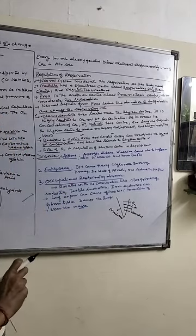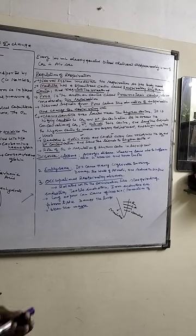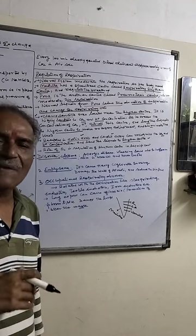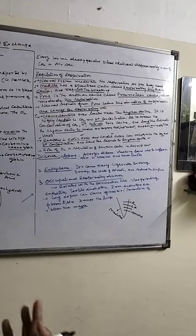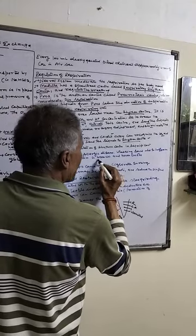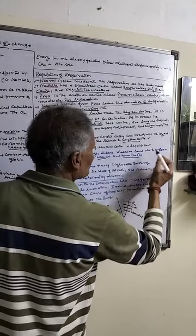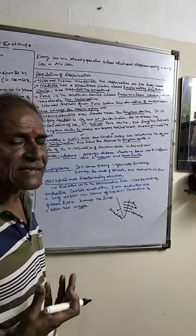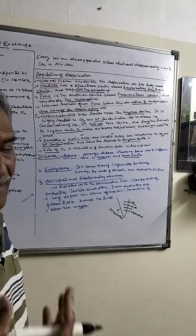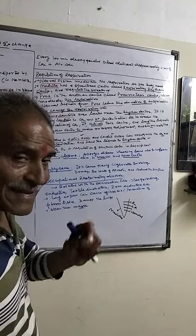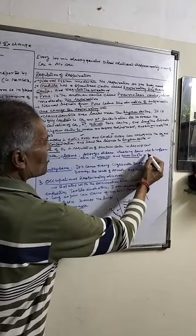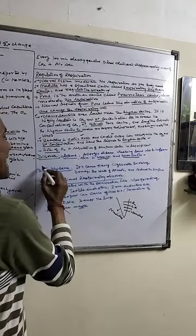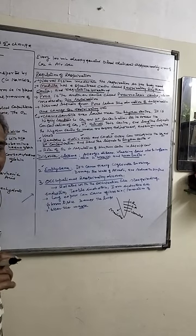Now there are some disorders. First of all, asthma. Asthma is an allergic disease. It is due to the inflammation of bronchi and bronchioles.